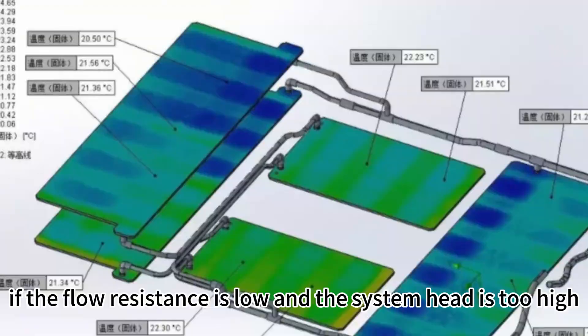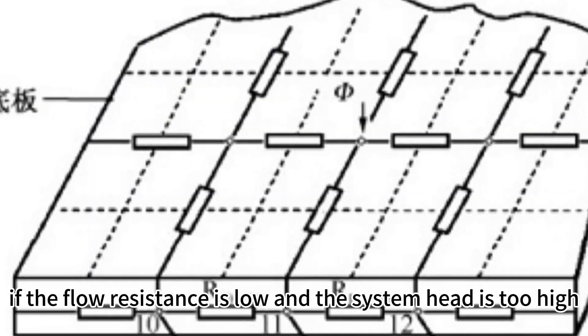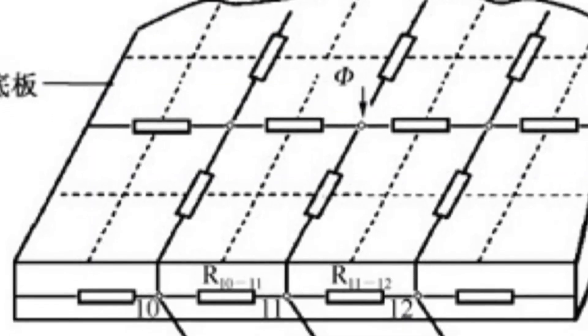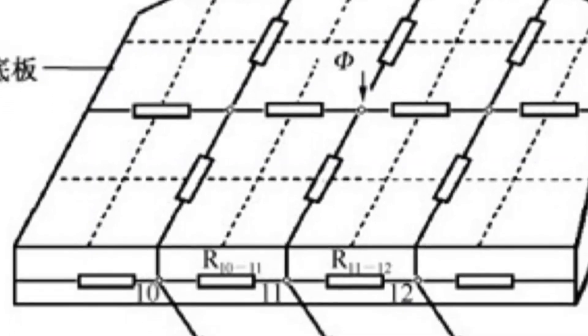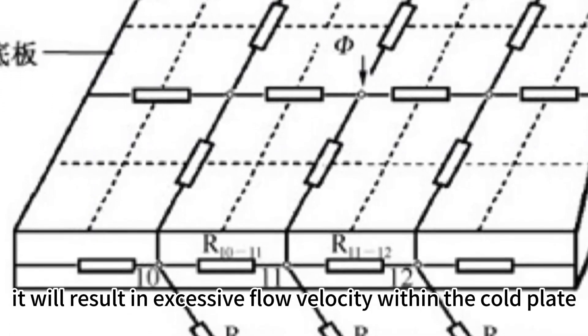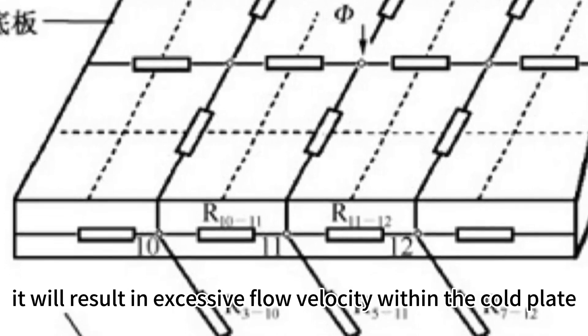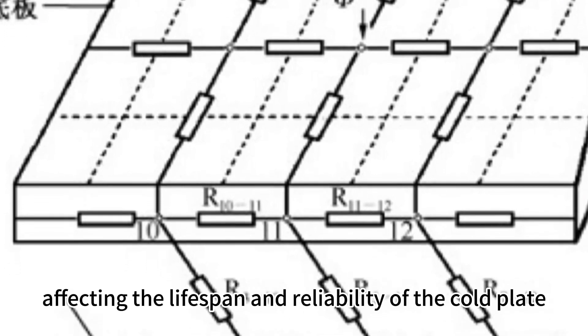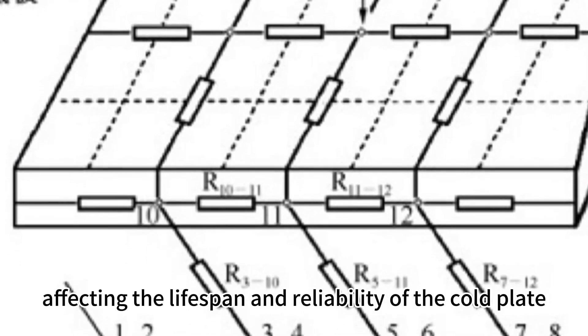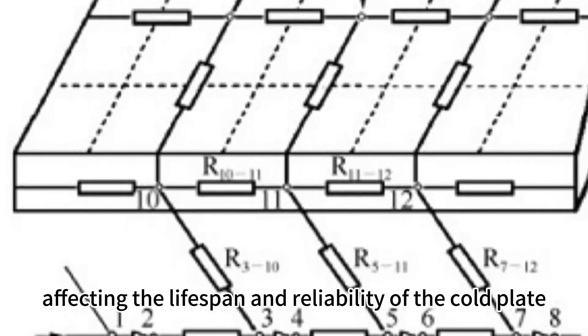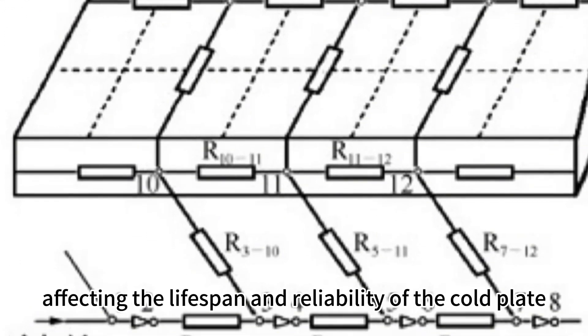Conversely, if the flow resistance is low and the system head is too high, it will result in excessive flow velocity within the cold plate, affecting the lifespan and reliability of the cold plate.